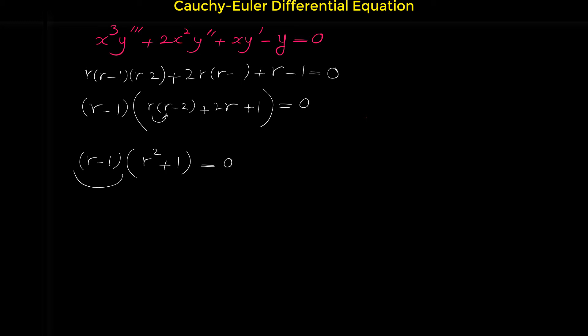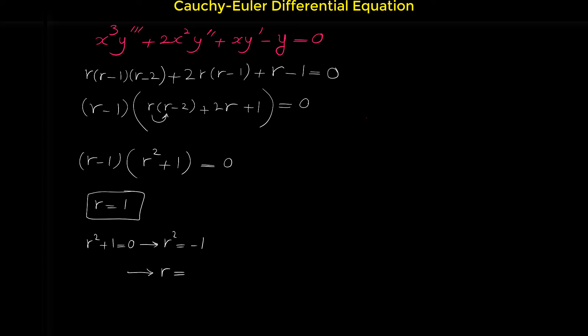We set each factor equal to zero. From the first bracket, r = 1, which is a simple real root. From the second bracket, r² + 1 = 0, giving r² = -1, which yields two complex roots: r = ±i. Here alpha is 0 and beta is 1.